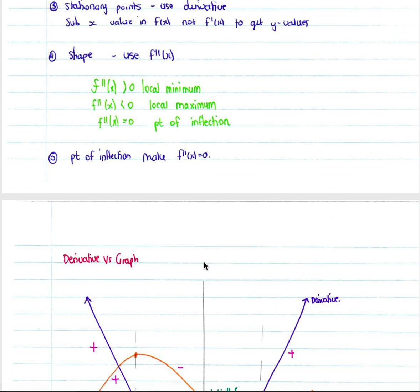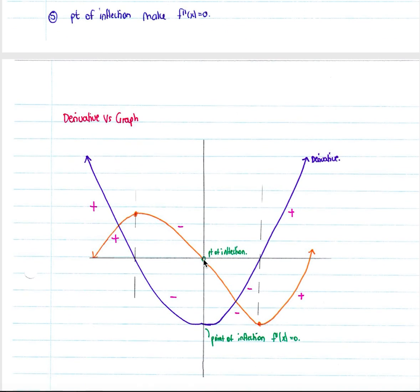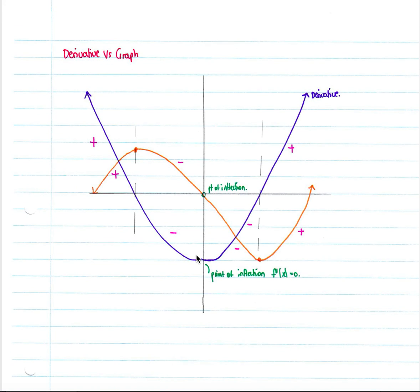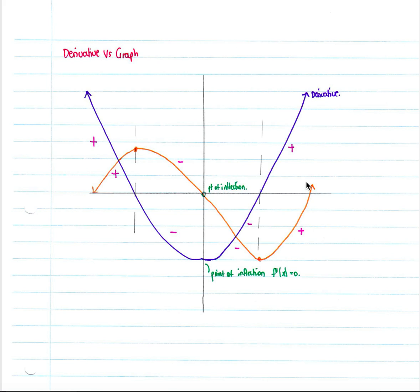Sometimes they may ask you to plot a derivative graph versus the actual graph. If we have a cubic graph and want to plot its derivative: up until the first turning point the gradient is positive, so the derivative graph is above the x-axis; from the first turning point to the second the gradient is negative, so the derivative graph is below the x-axis. The turning point of the derivative graph corresponds to the point of inflection on the cubic. From the second turning point onwards, the gradient is positive again, so the derivative graph is above the x-axis.